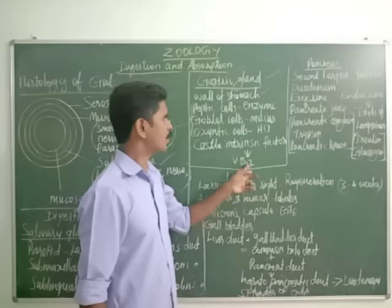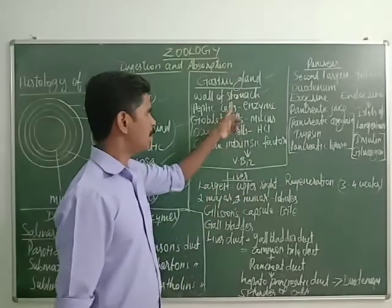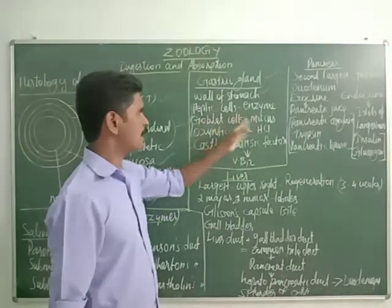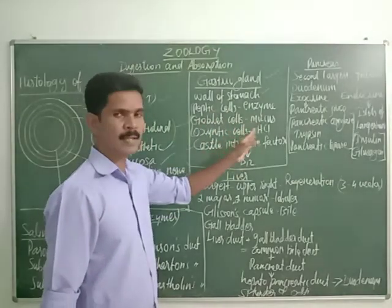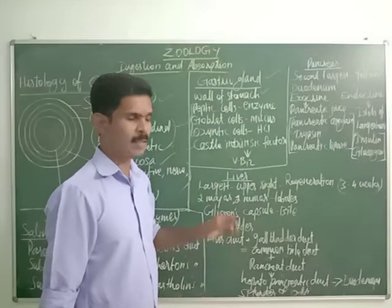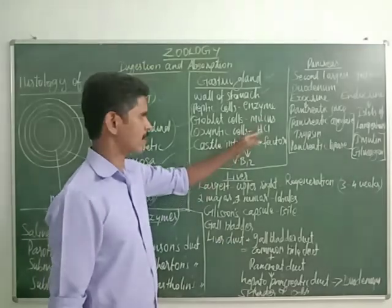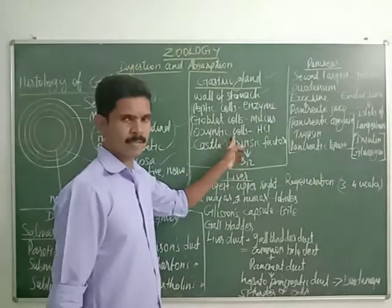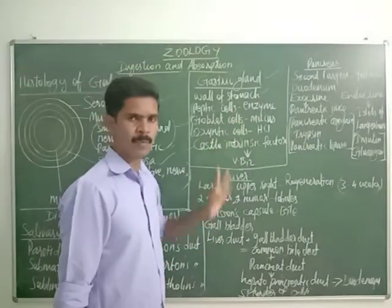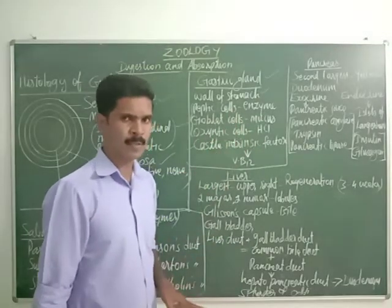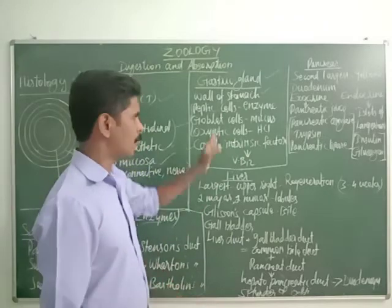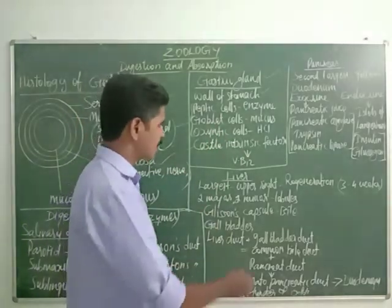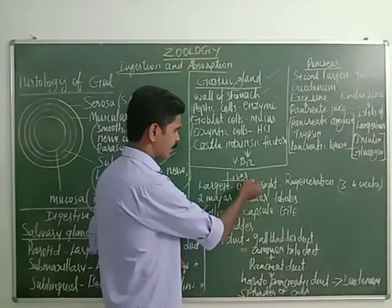So there are many one-mark questions from this topic. For example, which cell secretes hydrochloric acid inside the stomach? The answer is oxyntic cells. Hope you are interested in this gastric gland. Next gland is the liver.